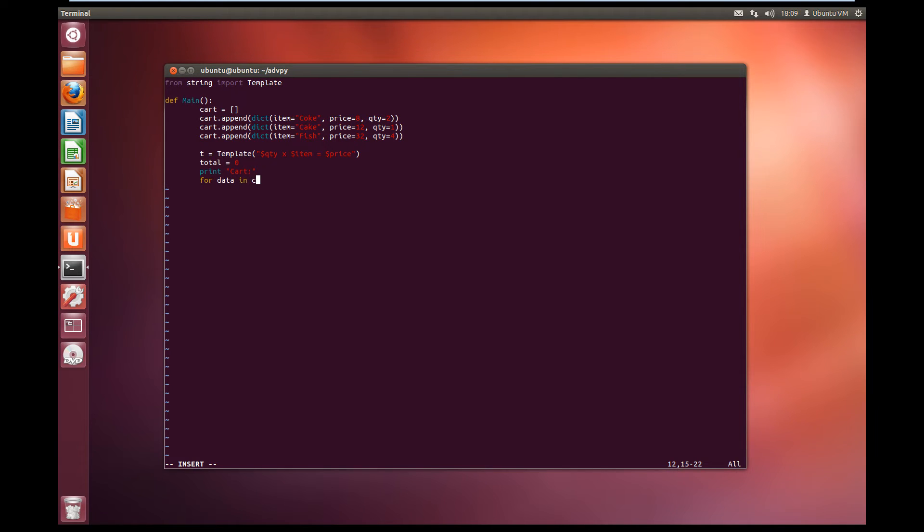So for the data in our cart, we are going to print t.substitute. And we're going to substitute the data values into our template and print it out. And we'll add to our total. So total plus equals our data open square brackets, and our price keyword, so open quotes price. And that will add the price onto our total. Now let's print out our total. So in quotes total plus string of total so we know what the total cost is going to be.